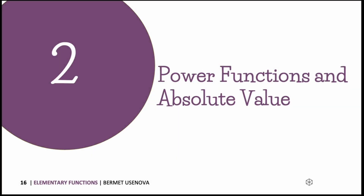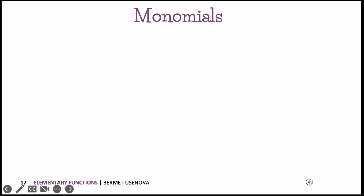We're moving to the next part of our chapter: power functions and absolute value. In this section we will get familiar with different types of power functions and their graphical representations, so by looking at the graph you could have an idea what function it is, or vice versa. We will start from monomials. A monomial is a power function f represented as x to the power of m, and those kinds of functions are called monomials.